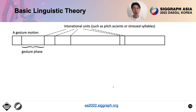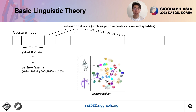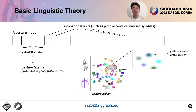To achieve it, we should start from linguistic theory. A gesture motion consists of a sequence of gesture phases that align with intonational units. The gesture phase is often referred to as gesture lexemes by linguists. These lexemes form a gesture lexicon, such as the finger pointing in the middle. Each color denotes a gesture cluster. We define the cluster center as the gesture lexeme. Different speakers may apply slight variations to the lexeme, and finally get the real gesture segment.